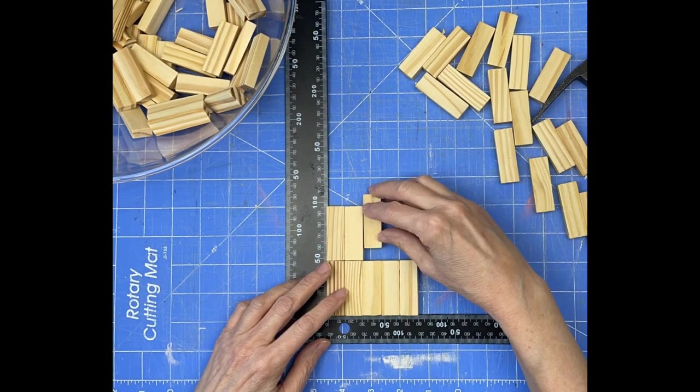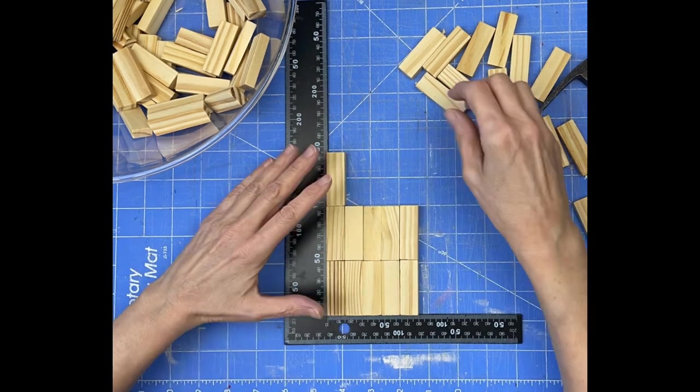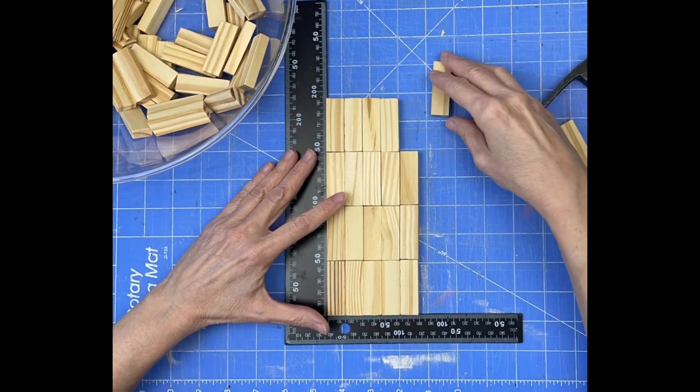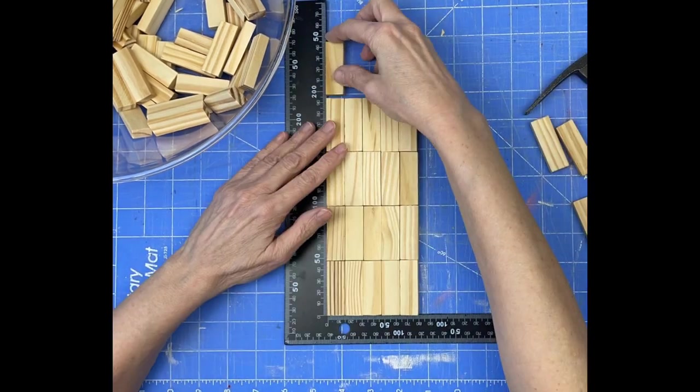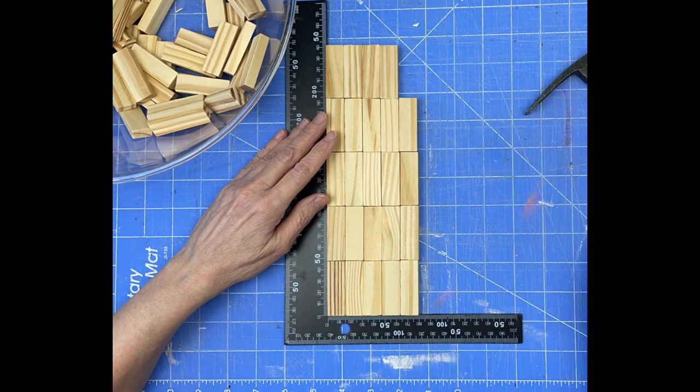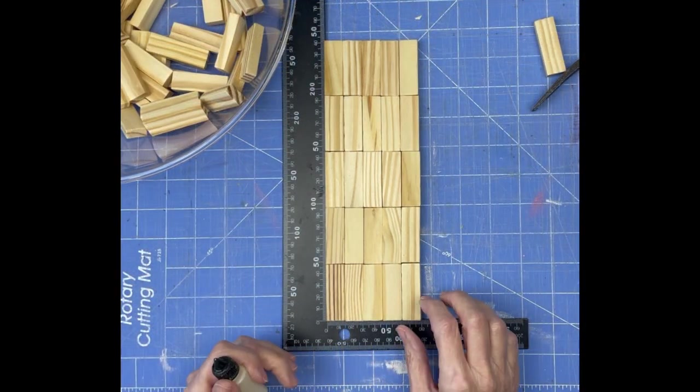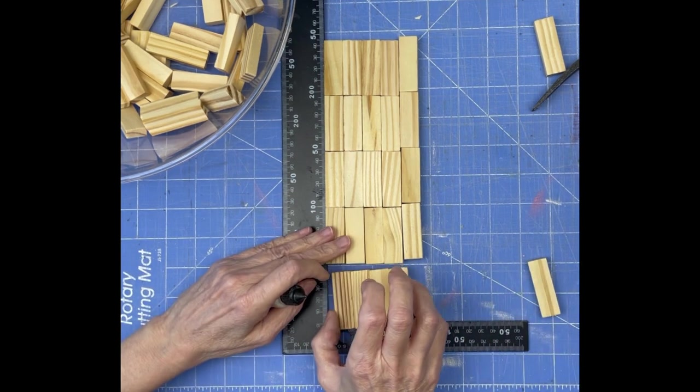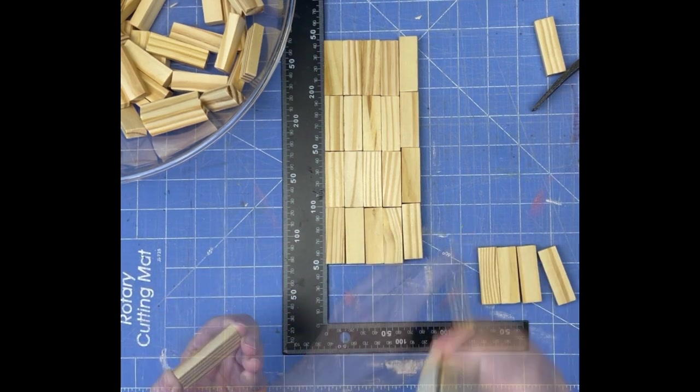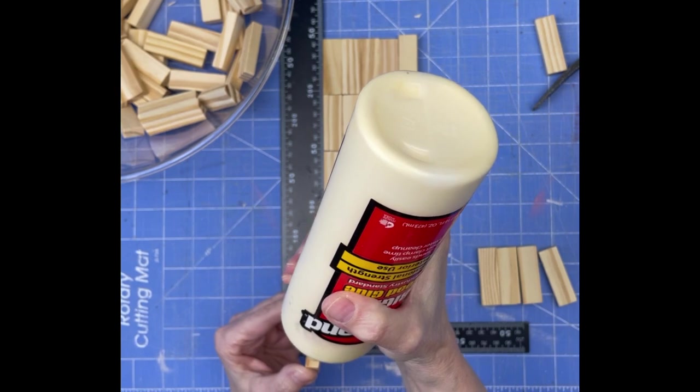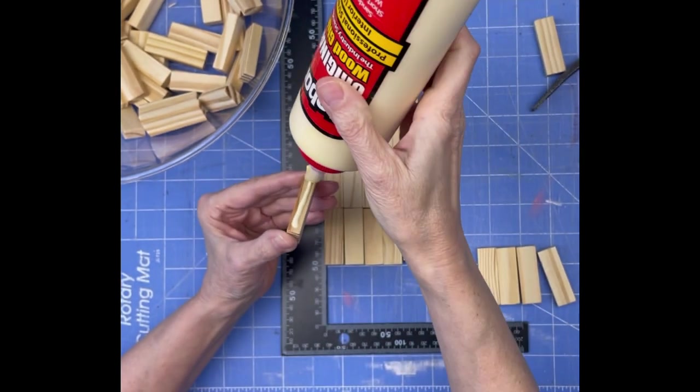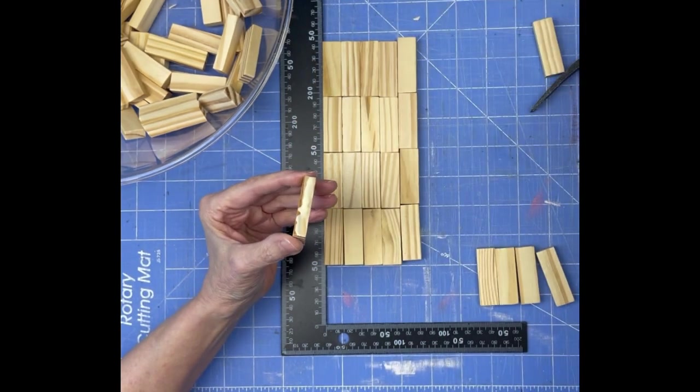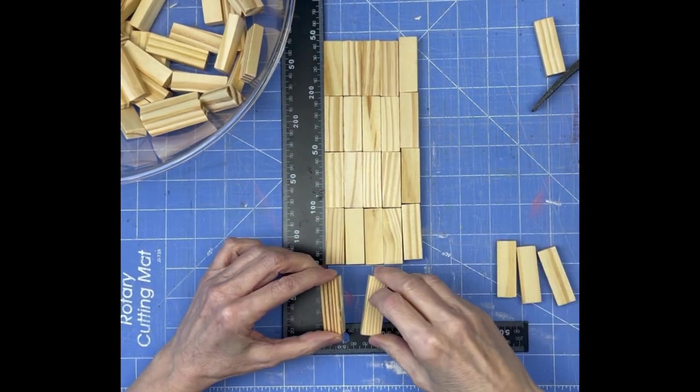The first thing I'm making today is a small vanity tray. I'm starting with 35 tumbling tower blocks and I'm going to glue them together to make the base of the tray. As you can see, I'm using a square. This is the absolute best method to ensure that you get these blocks really straight and level. I decided to use wood glue because it gives me a little bit of work time, but it does dry fairly fast and it will make this tray much stronger than a lot of other glues.